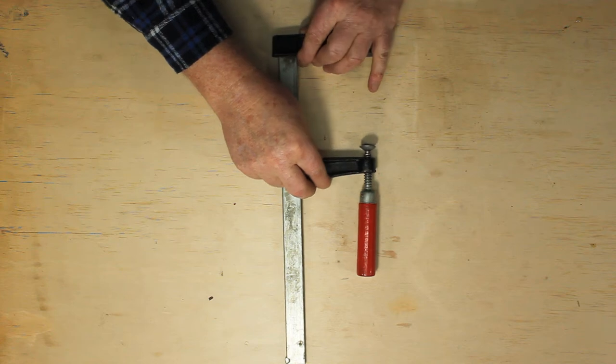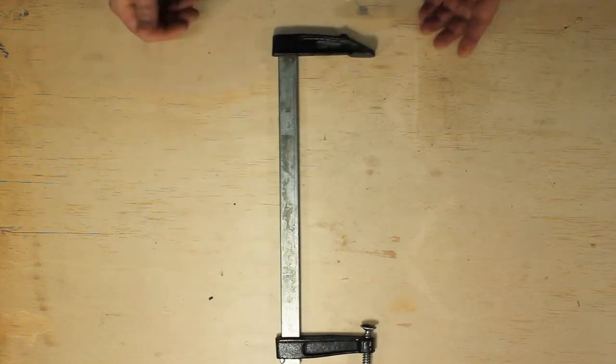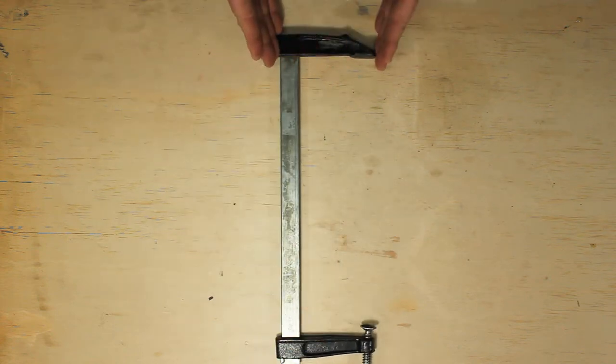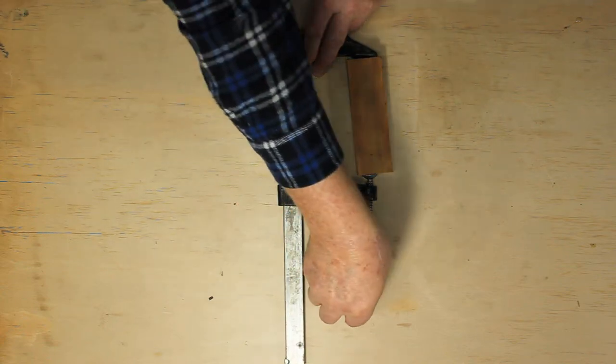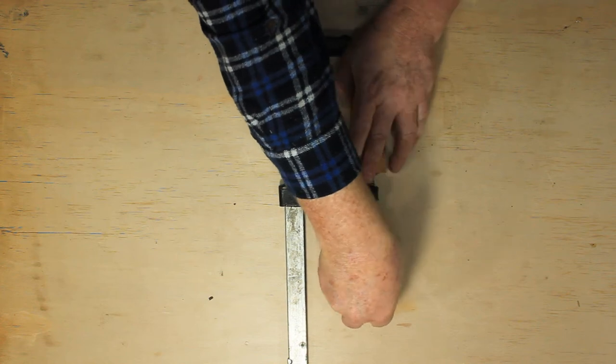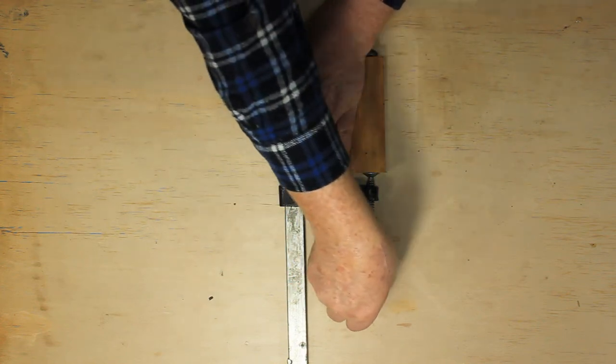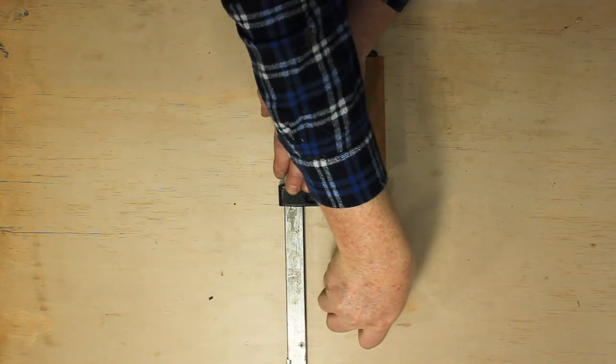F clamps are very useful in that they're usually much longer than a similar reach of G clamp. You can also move one jaw very quickly to where it needs to be before you tighten it. They can be finicky in grabbing hold of the bar when you're starting to tighten up.